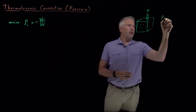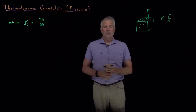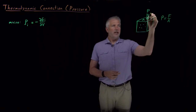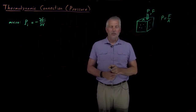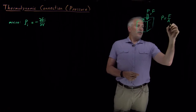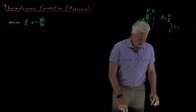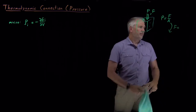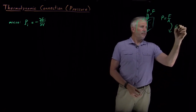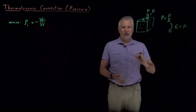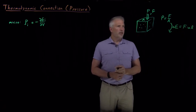From a macroscopic point of view, we can think of pressure as force per unit area. If the surface area of the top of the box is some area A, then there's some force pushing down on the top of the box, and that force divided by the area is the pressure on the top of the box. We also know that work is force times the distance over which that force acts, so a change in energy equals force times distance.